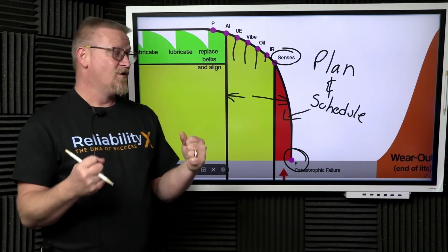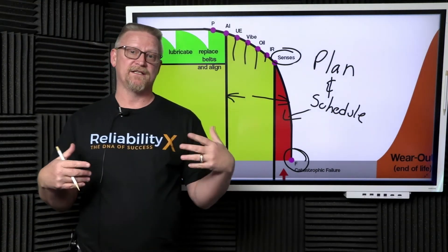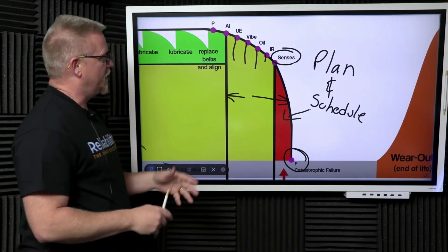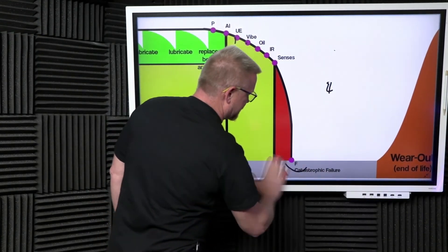If we can properly plan and schedule the work and gain access to the asset without the additional catastrophic damage, we have not only lowered the maintenance cost long-term for this asset, we have also minimized the impact to the operation, which is our responsibility as well.